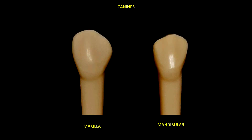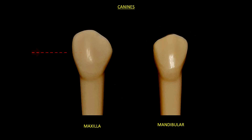Now let's have a look at the canines. We are looking at both the maxillary canine and the mandibular one. The maxillary canine is much wider compared to the mandibular canine. If we place the red line again, we shall see that it is truly much wider in the mesiodistal dimension.